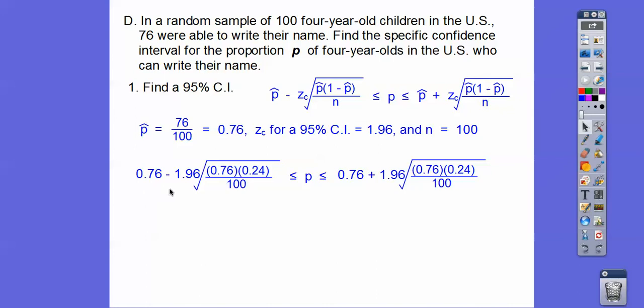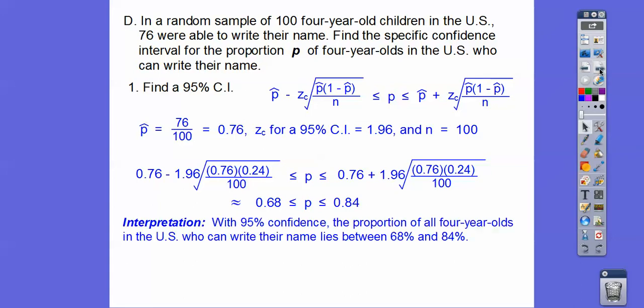This is 0.08, so 0.76 minus 0.08 will give us about 68%, and 0.76 plus 0.08 is 0.84. Always make an interpretation of the context of the problem. With 95% confidence, the proportion of all 4-year-olds in the United States who can write their name lies between 68% and 84%.